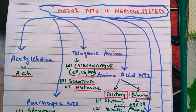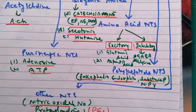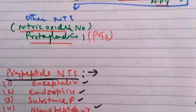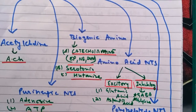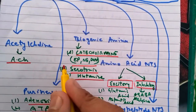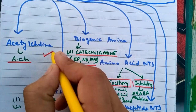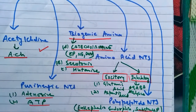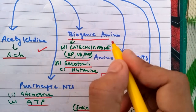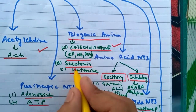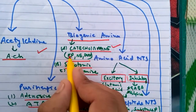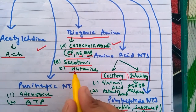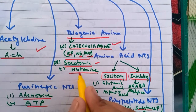The major types of neurotransmitter in the nervous system are: first, acetylcholine — very well known and well understood; second, biogenic amines, which are modified amino acids. These include catecholamines — epinephrine, norepinephrine, and dopamine — and also serotonin and histamine.